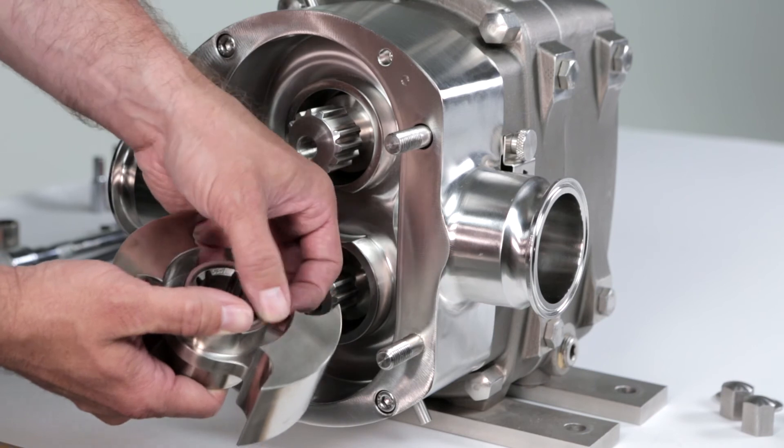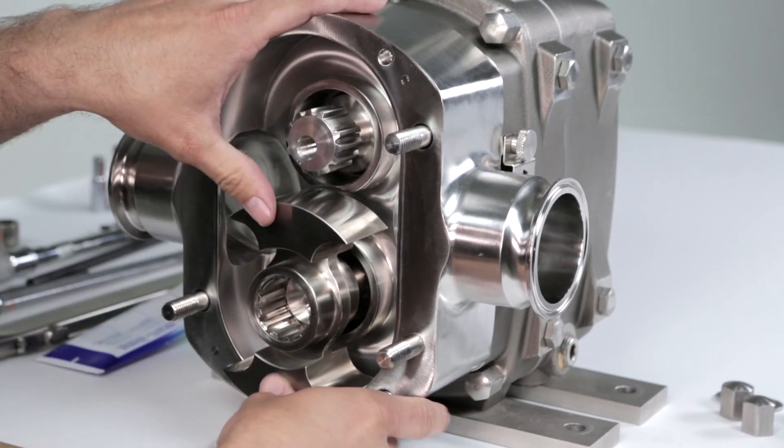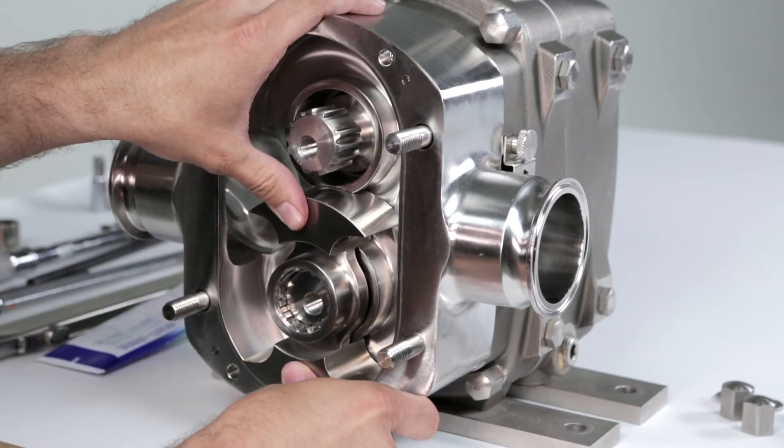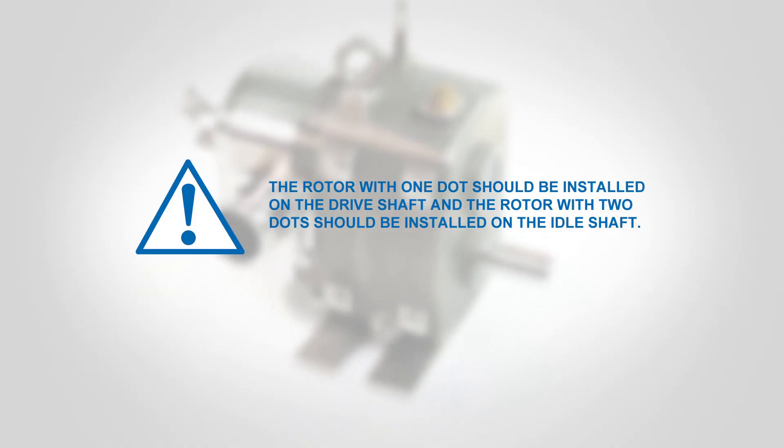Install the rotor o-ring on the back side of each rotor. Install the rotor with the rotor o-rings facing the back of the housing. Note, the rotor with one dot should be installed on the drive shaft and the rotor with two dots should be installed on the idle shaft.